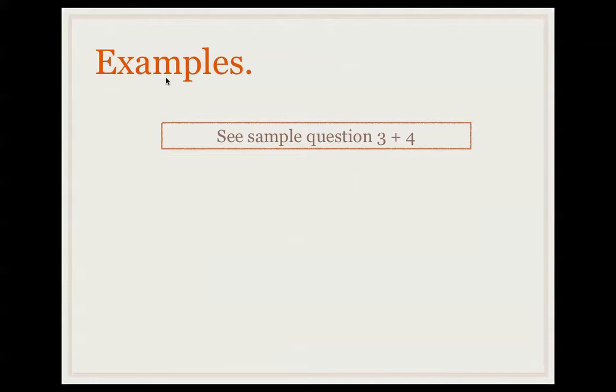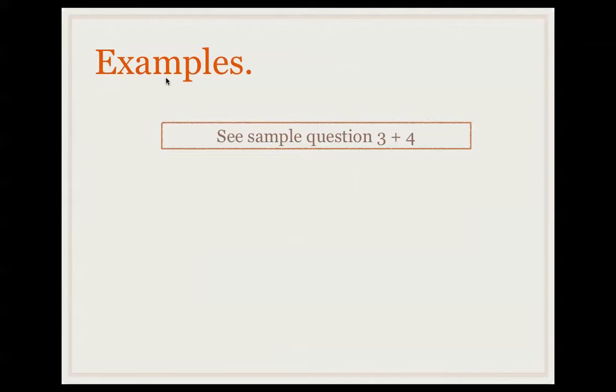And then we have a summary. This is a summary of how to do stoichiometry. You always need to write a balanced equation for a chemical reaction. You always must calculate the number of moles. Then you must do the ratio. And then you find out what the question is asking you. So after your ratio, you go back and convert it into what it is. You need to show all this working out for every single question. If you don't, it's very hard to work out what you're doing right and what you're doing wrong to help you.